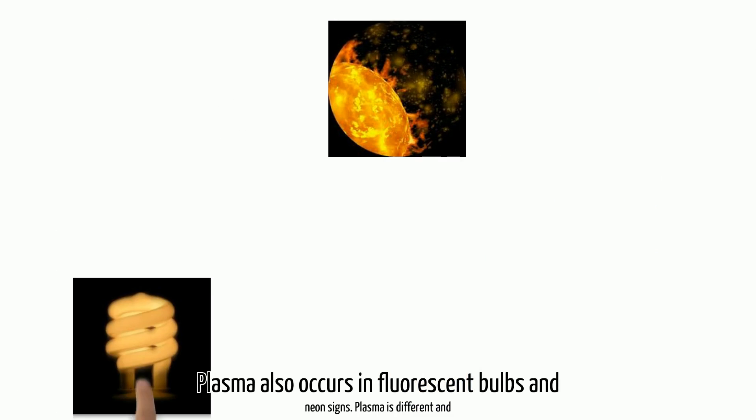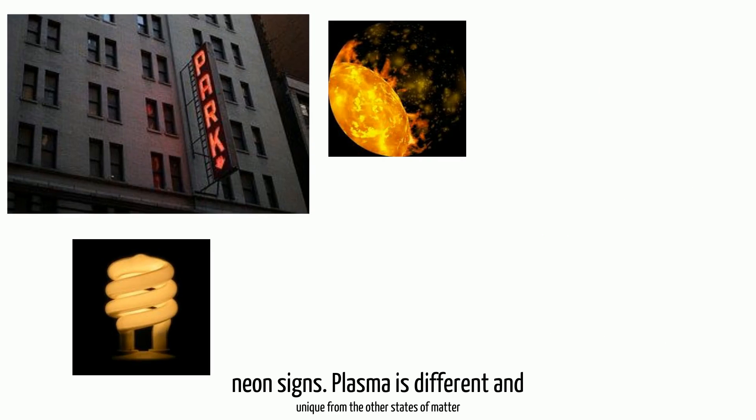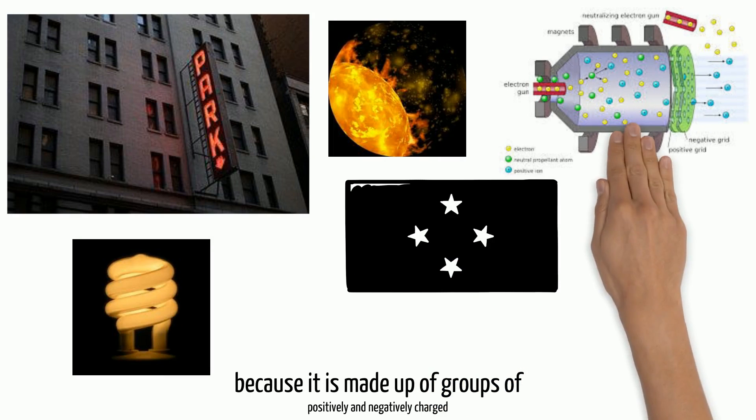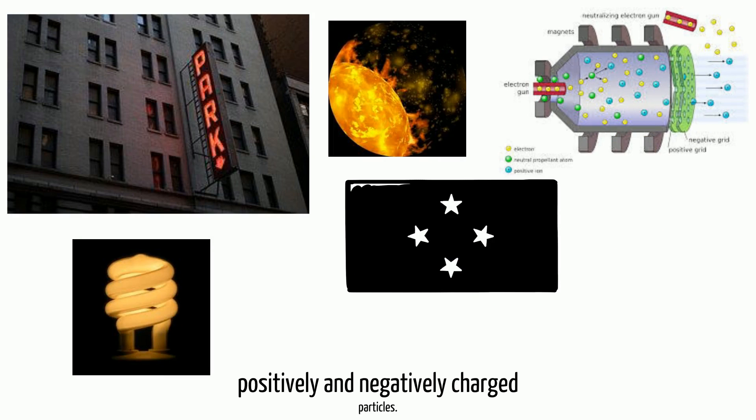Plasma also occurs in fluorescent bulbs and neon signs. Plasma is different and unique from the other states of matter because it is made up of groups of positively and negatively charged particles.